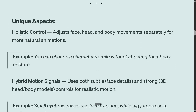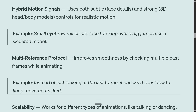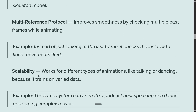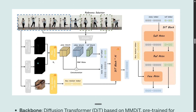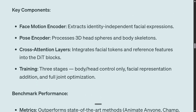Talking about the unique aspects: holistic control — edges, face, head, body movement, everything is in sync. Hybrid motion signal uses both facial details and 3D head and body models to control realistic motion. Multi-reference protocol works for different types of animation. Now this is the architecture — it looks very complicated, so I'll give you a brief. The backbone is DIT, which is the preferred framework for most video and image generation now. Key components are the face motion encoder and pose encoder. And the cross-attention layer helps merge attention from different sources — face attention and pose attention — combining everything together into one.